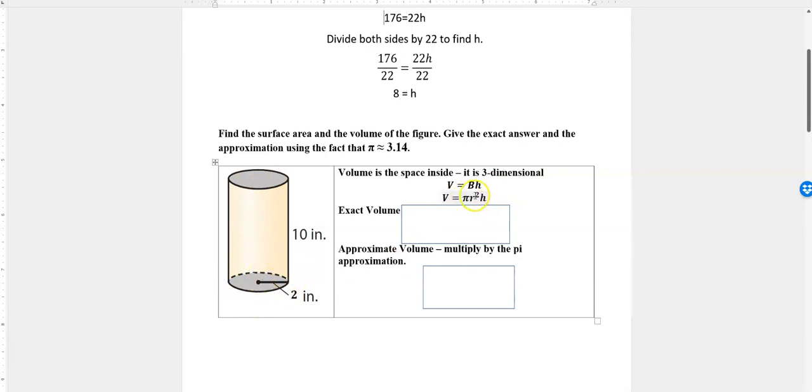The exact volume means to leave that pi symbol in. So if we take pi r squared h, our r is 2, 2 squared times h is 10. You can see 2 to the second power is 4 times 10 is 40, so 40 pi to the third power because it's a three-dimensional shape. That would be the exact value.